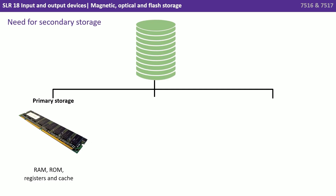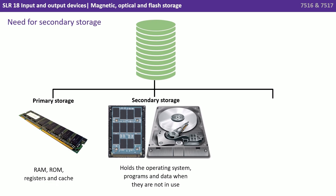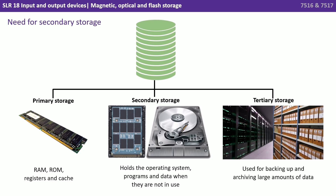Let's start by considering the three main types of storage before we look at why we need secondary storage. We have primary storage — that's the RAM, ROM, registers and cache. Secondary storage holds the operating system, programs and data when they're not in use. And then, although not in the specification, we have what's called tertiary storage, used for backing up and archiving large amounts of data.